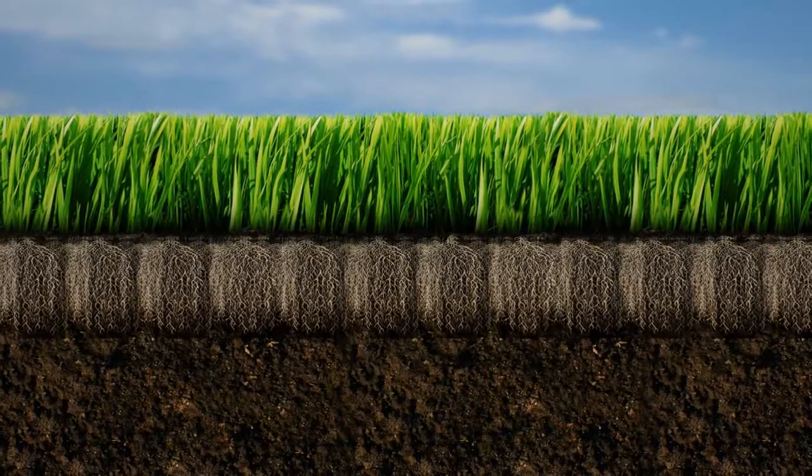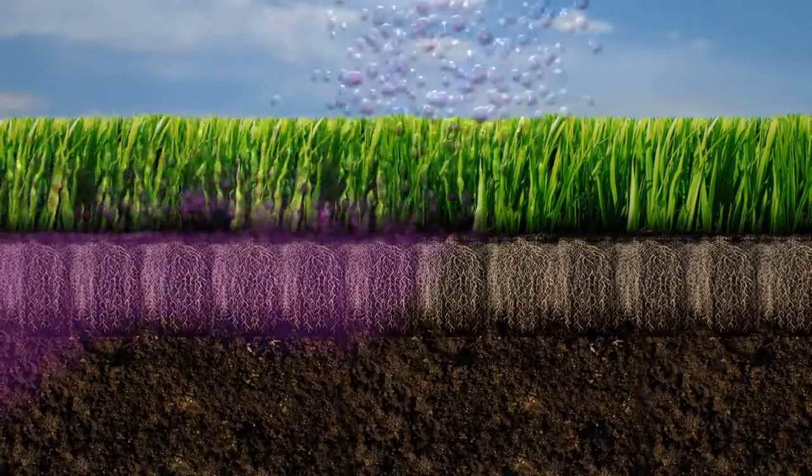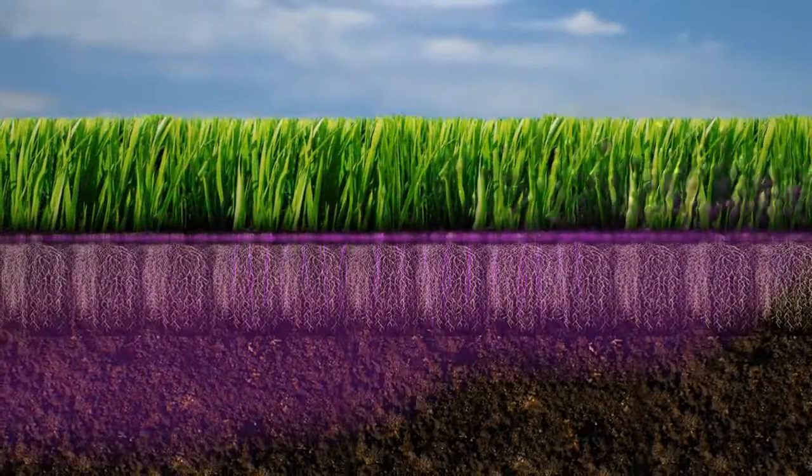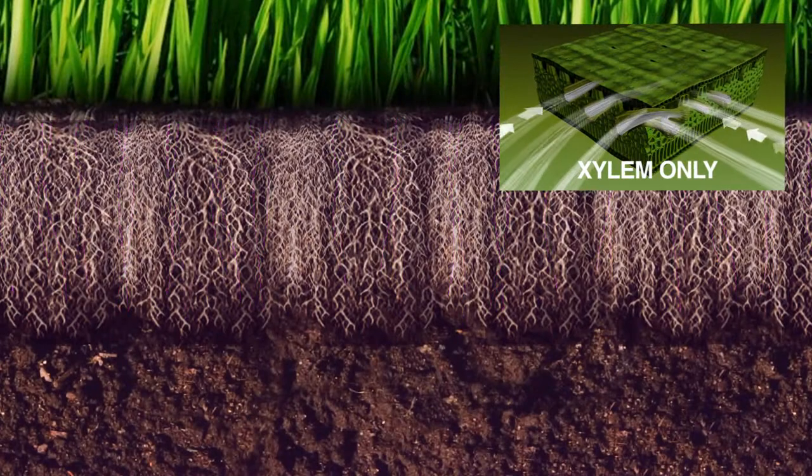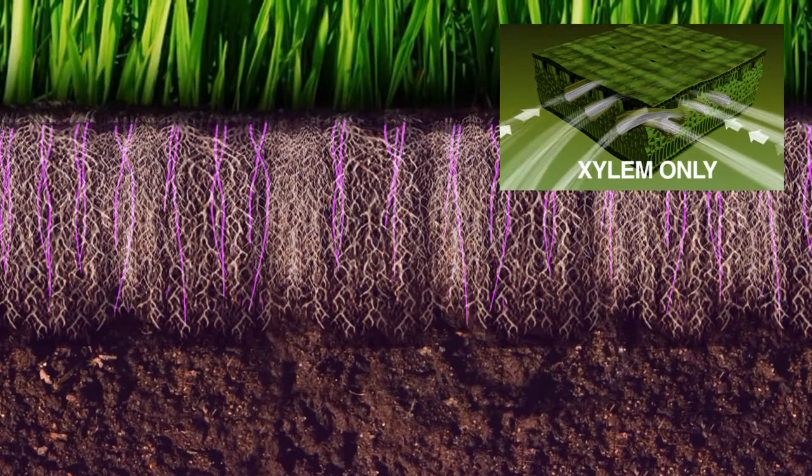Most nutrient delivery system products take advantage of one of these systems. The problem is that the main point of entry for the xylem is the root tips, not from foliar application. And the phloem doesn't let just anything in.